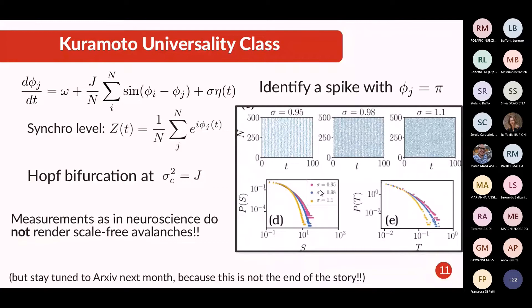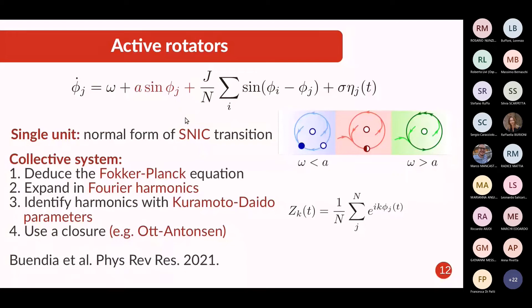We are doing new analysis on these synchronization systems and how this way of measuring avalanches affects, like what are the results in different setups and with some variations. And we are very close to have some results that I would like to show you, but still they need some processing and I hope that they will be ready for next month. But I think that this is not the end of the story and there is still a lot to explore in this thing. So coming back to the question of what is the universality class of the Landau-Ginsburg and maybe the real data, okay, the Kuramoto model does not work. So what can we do? And the idea was, let's try to add some excitability to the oscillators.